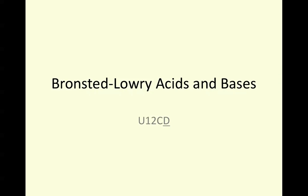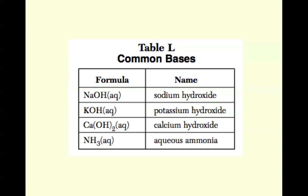We're going to be focusing on Bronsted-Lowry acids and bases. This is going to be concept D in your note packet. You may have noticed with our discussion so far about Arrhenius bases that our first three on Table L in your reference tables matches what we know about Arrhenius bases — that it's going to be placing hydroxide ions as their only negative ion in solution.